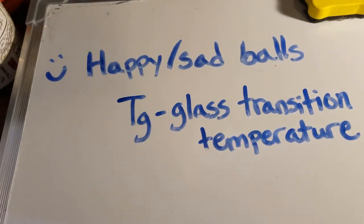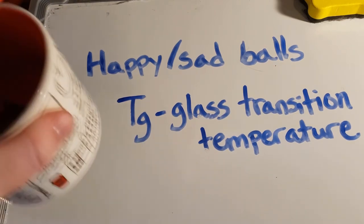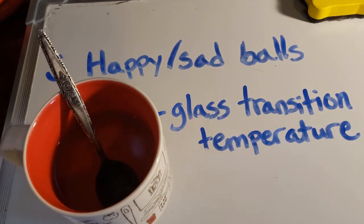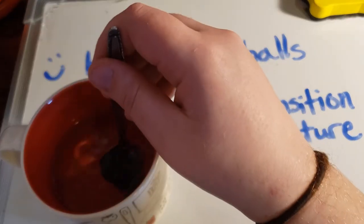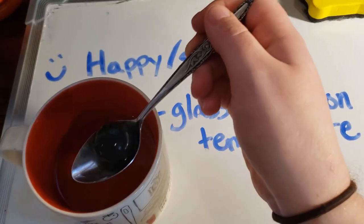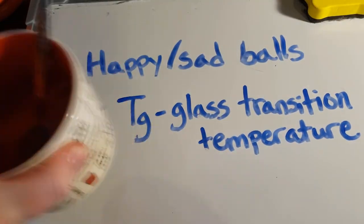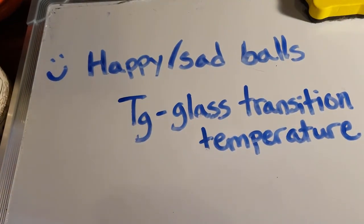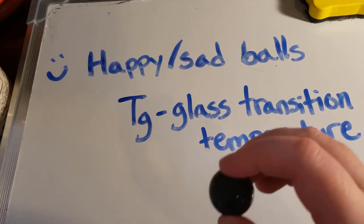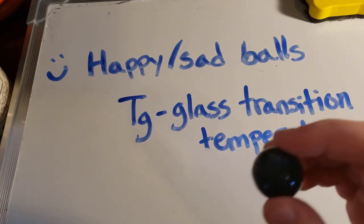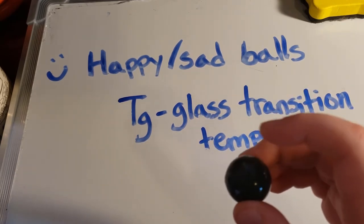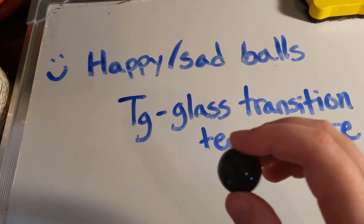We can experiment with this further by taking a look at a cup of very hot water that I put the sad bouncy ball into. I'm going to scoop that out, preferably without burning myself. So this is the sad bouncy ball that had no bounce to it — but now it's very hot. It was essentially in boiling water; it's cooled down a little, but it's still pretty hot.